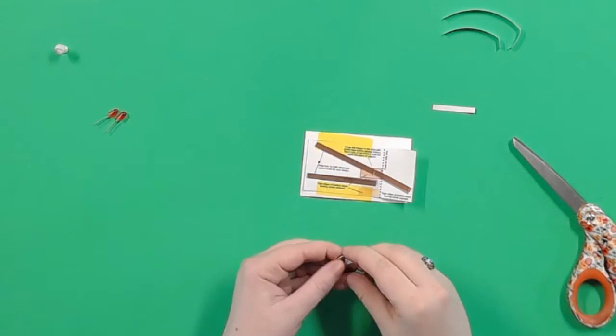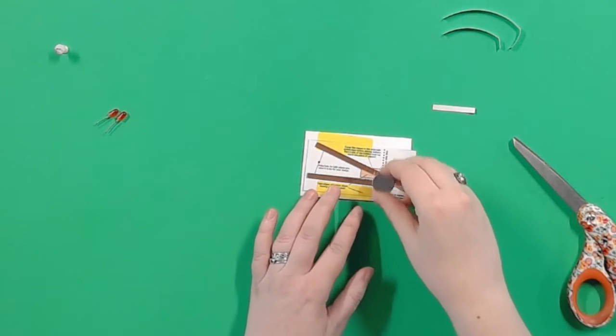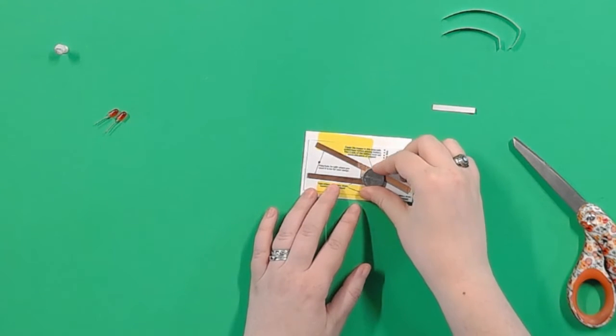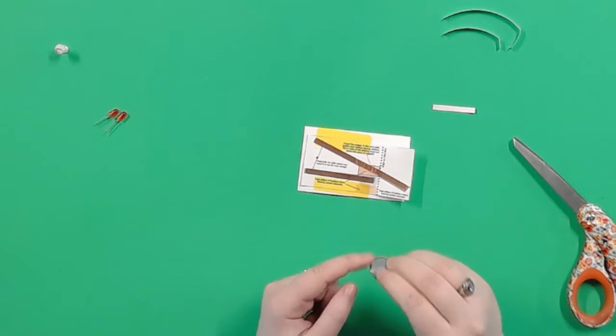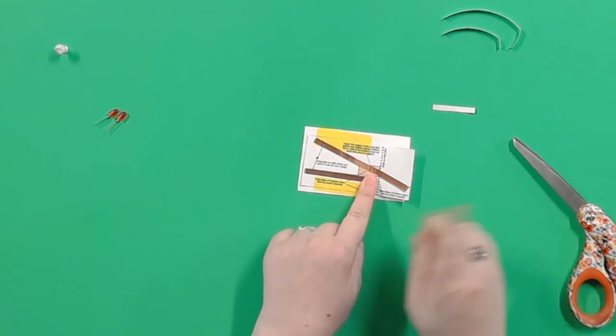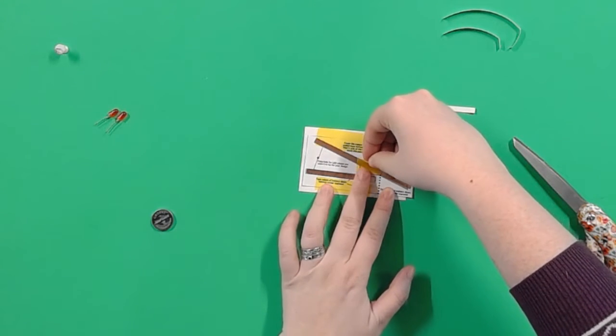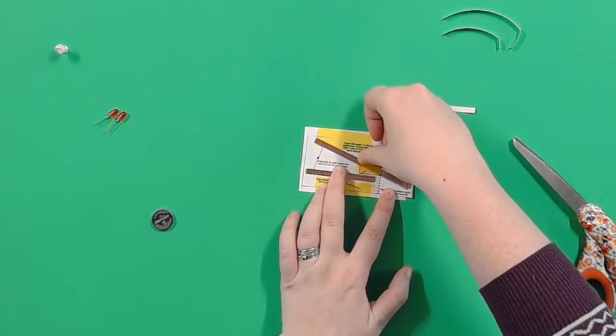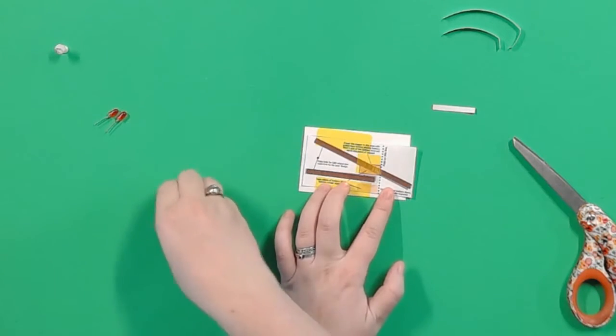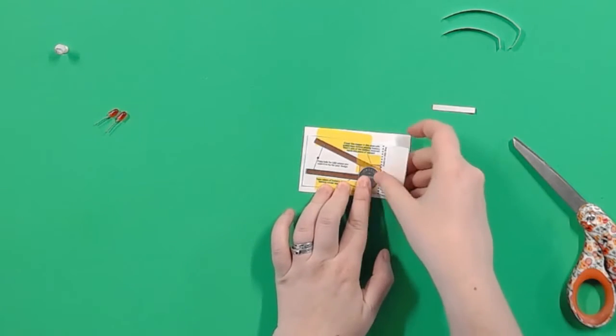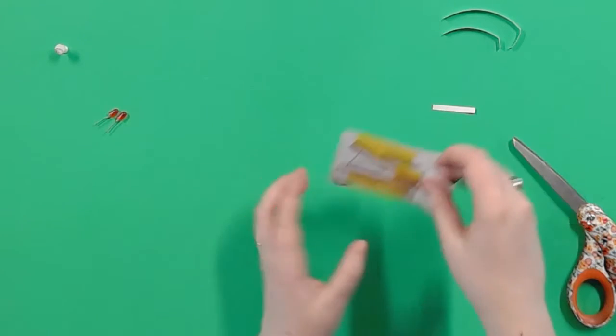But something's wrong. Only one copper strip should touch either side of the battery, but when I put it down on the card here, the bottom negative side touches both strips. How can we fix that? With tape! Put some tape down over the long copper tape where the bottom of the battery touches it. There's a box on your template to show you where.